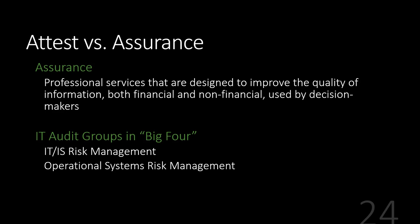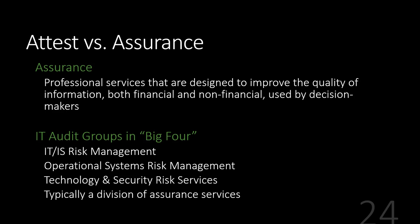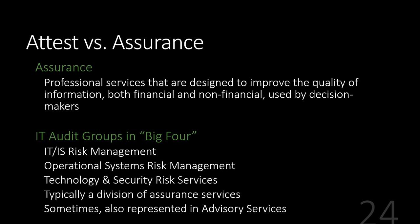IT audit functions can appear as risk management, operational systems, technology, or security risk services depending on how the CPA firm is organized. With each new managing partner or CEO, a firm could shift the org structure. Sometimes IT audit shows up in advisory services, since those practice groups have a lot of technology knowledge and can help out the audit functions. Other times it shows up in the assurance and audit branch. So depending on your firm, you may want to check the org structure to see where the IT audit function falls.